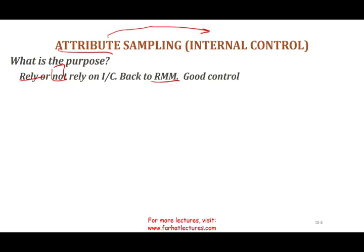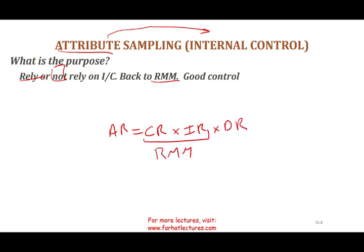The audit risk model is: AR (audit risk) equals control risk times inherent risk times detection risk. Control risk and inherent risk together are called the risk of material misstatement. The key relationship is that RMM and detection risk are inversely related — when one goes up, the other goes down.